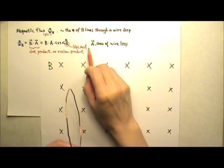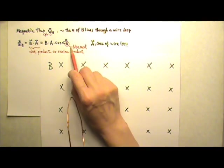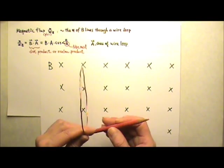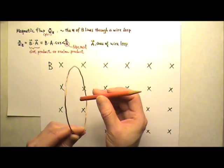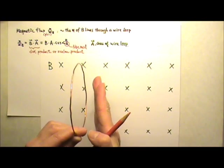Usually, area is a scalar, but here, area is a vector. And we use its normal vector for the direction of the area. Normal means perpendicular. So a normal vector means it's a vector that is perpendicular to the plane of the loop.